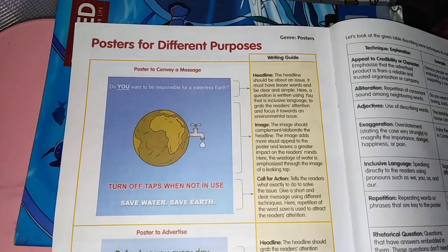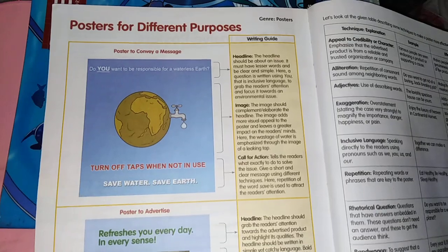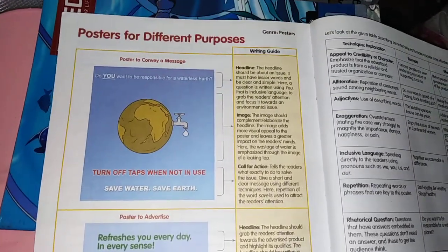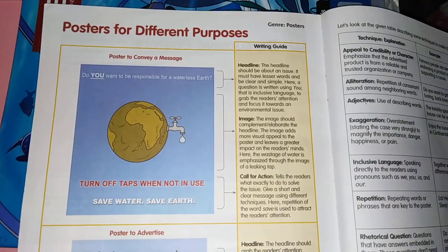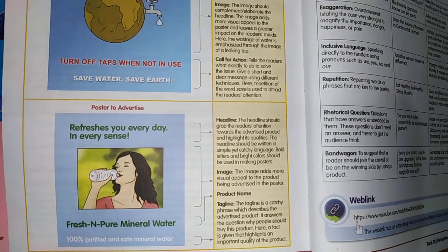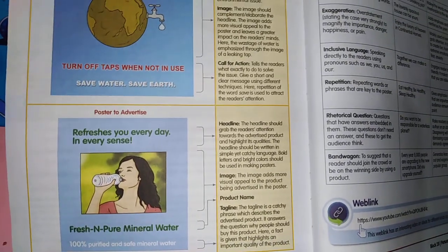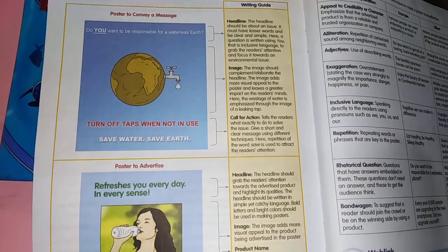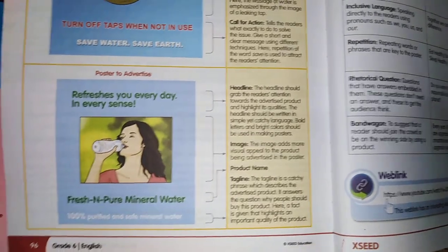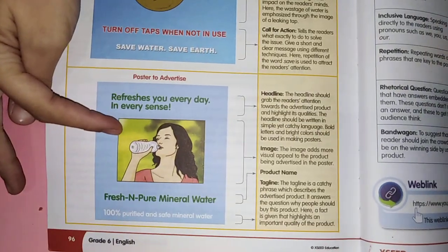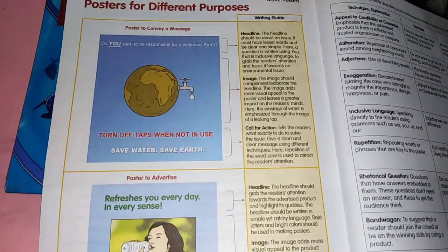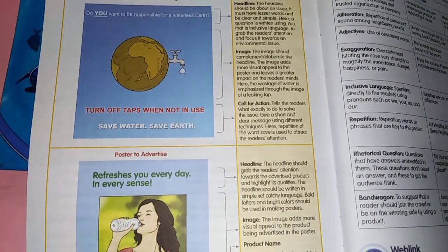What do you think is the purpose of the poster? The poster persuades the audience to save water and to save the earth as well. It begins with a catchy headline: 'Do you want to be responsible for a waterless earth?' and 'Refreshes you every day in every sense.' When we say catchy, that means it is noticeable. It is written in concise words. A picture further emphasizes the idea — save water on earth, and a girl drinking water from a bottle. There is also a call for action for the social issue. These features are called persuasive techniques.